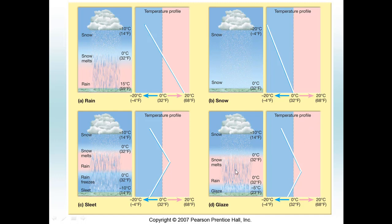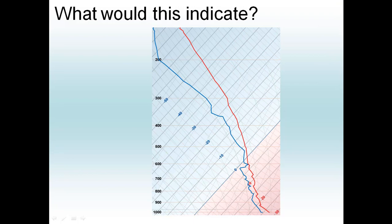Looking at the temperature profile for freezing rain, it is very similar to the profile for sleet. However, as we get towards the surface of the earth, temperature actually warms a little and then decreases just slightly very close to the surface — another inversion. The key difference from sleet is that instead of a smaller warm layer, you have a bigger warm layer and then a very tiny cold pocket of air right close to the surface. These are the differences between rain, snow, sleet, and freezing rain.